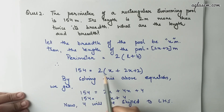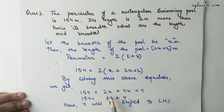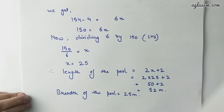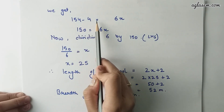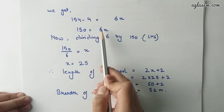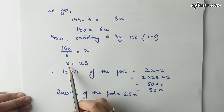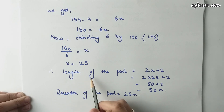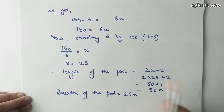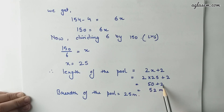According to the question, 154 is equal to 2 into (x plus 2x plus 2). By solving, we get 154 equals to 2x plus 4x plus 4, which gives 154 equals to 6x plus 4. Shifting 4 to LHS, we get 150 equals to 6x, so x equals to 150 divided by 6, which gives x equals to 25. Therefore, the length of the pool is 2x plus 2 equals to 50 plus 2 equals to 52 meters and the breadth is 25 meters.